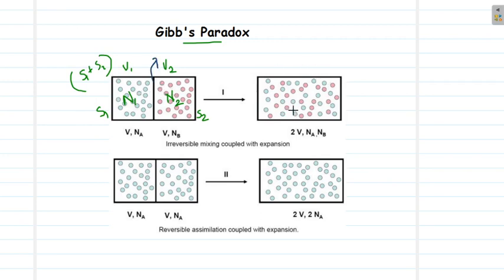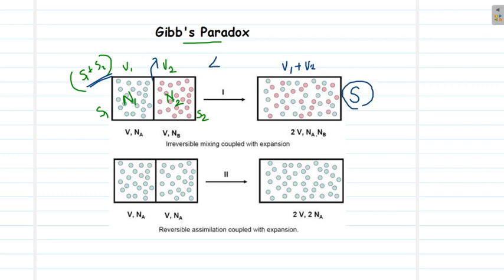The total entropy of the system is S1 plus S2. Now suppose we remove this partition and allow the gases to mix. The total volume will be V1 plus V2, the total number of molecules will be N1 plus N2, and the molecules are of different kinds. We calculate the total entropy of the new system S, and we observe a change in entropy delta S associated with this mixing process. Since this process is irreversible, the entropy change should be greater than zero.